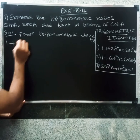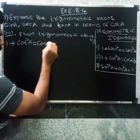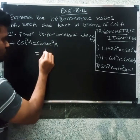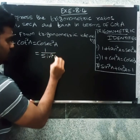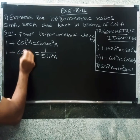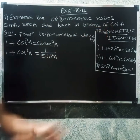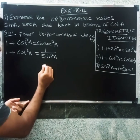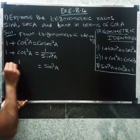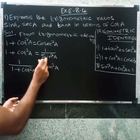From the identity: one plus cot square a equal to cosecant square a. The cosecant is the inverse of sine, so cosecant square a is the inverse of sine square a. Therefore sine a in terms of cot square a: sine square a equal to one divided by one plus cot square a.